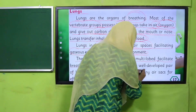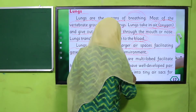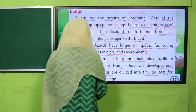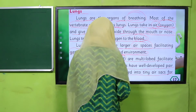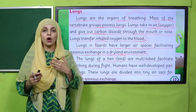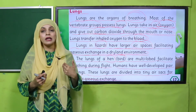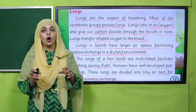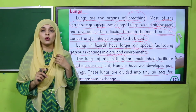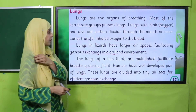Humans have a well-developed pair of lungs. These lungs are divided into tiny air sacs for efficient gas exchange. Humans have two lungs — one on the right and one on the left side — and they are well-developed. The tiny air spaces inside make gas exchange very easy and efficient.